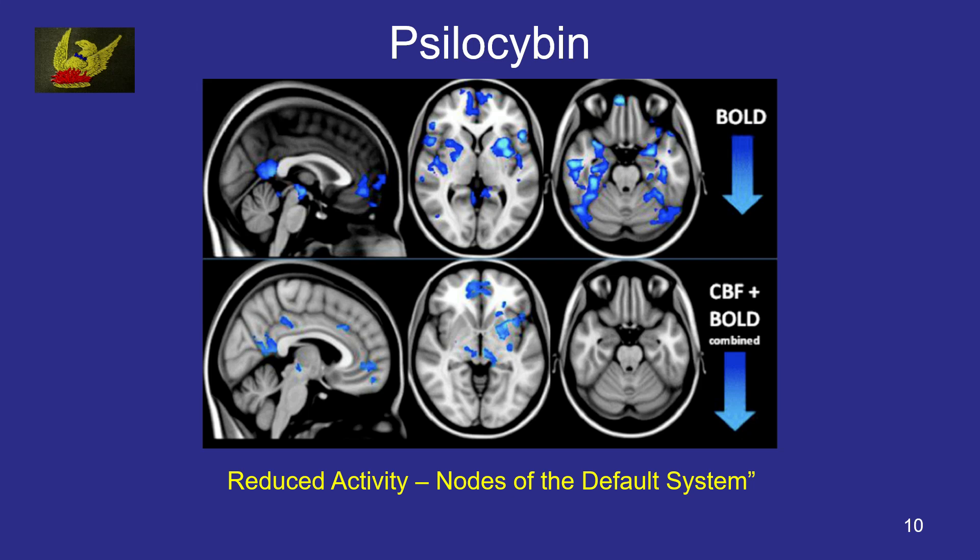What we're learning now is that psychedelics, in fact, remove the filters so you get a much wider view of reality. Here's an MRI scan showing the areas of reduced activity in the brain when you take it. These are the nodes of the default system, and the default system equates with the egoic structures — so that is taking the egoic structures away.